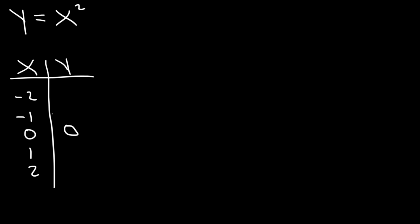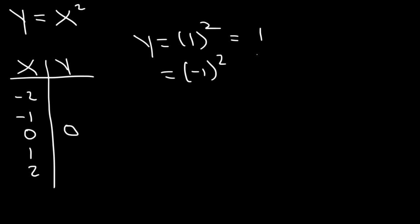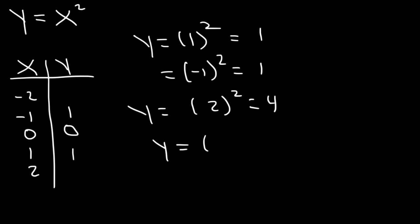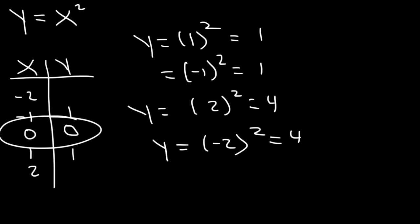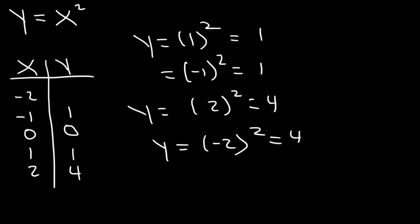The left side is going to have the same y values as the right side. For instance, if you plug in 1, 1 squared and negative 1 squared both equal the same thing: positive 1. If you plug in 2 squared, you're going to get 4. If you plug in negative 2 squared, you're going to get 4. Because they're equally distant about the vertex, these two points will have the same y value, and the other two points will also have the same y value.